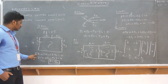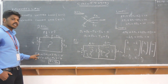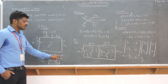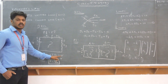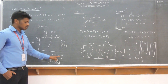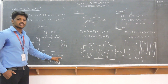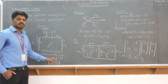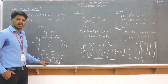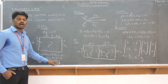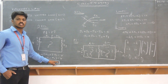Here, I×R1 is the voltage drop and V is the rising voltage. Therefore, I×(R1 + R2 + R3) equals the rising voltage V. From this, the total current I equals V divided by RT, where RT means the total resistance.